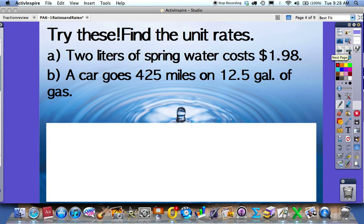Try these. I'd like you to find the unit rates, and you will bring these examples into class tomorrow to be checked by your teacher. The first one: 2 liters of spring water costs $1.98. I'd like to know how much it will be for one liter. And if a car goes 425 miles on 12.5 gallons, how many miles did it go on one gallon? Bring these examples in for your teacher tomorrow.